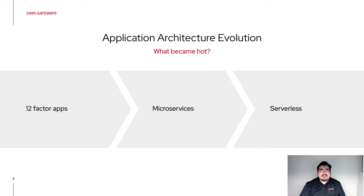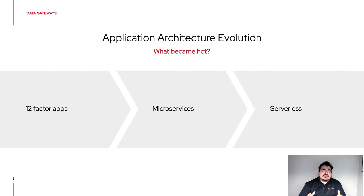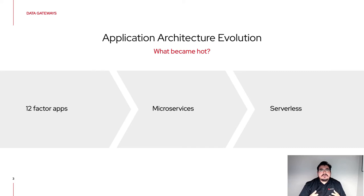That evolution obviously led us to microservices architecture, with all the benefits of having cloud resources that appear infinite and allow several deployments of our applications in different locations. The next step in this evolution is what is coming now on the topic of serverless and Function as a Service — serverless being the capability of having microservices, containers, or functions able to scale to zero and be activated only when there is an event or a request.